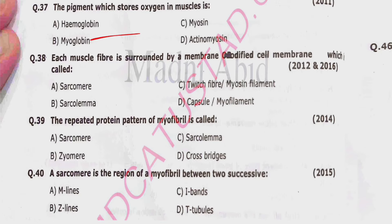Question 38: Each muscle fiber is surrounded by a membrane of modified cell membrane which is called sarcomere, sarcolemma, twitch fiber, or myofilaments. Correct option is beta — sarcolemma. Question 39: The repeated protein pattern of myofibrils is called sarcomere, sarcolemma, or cross bridges. Correct option is alpha — sarcomere.